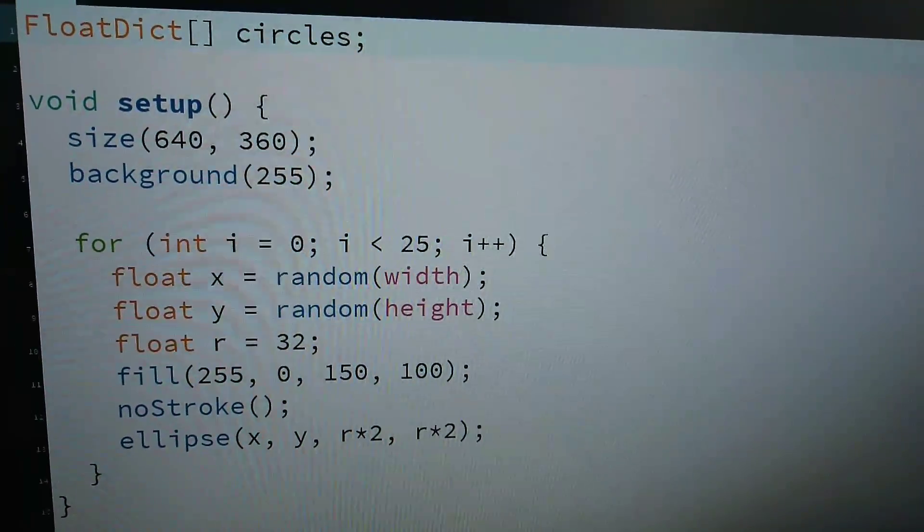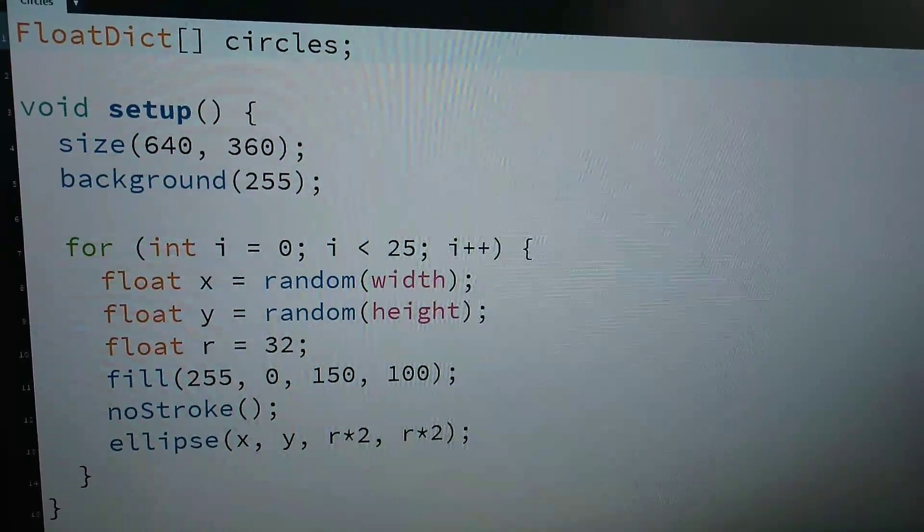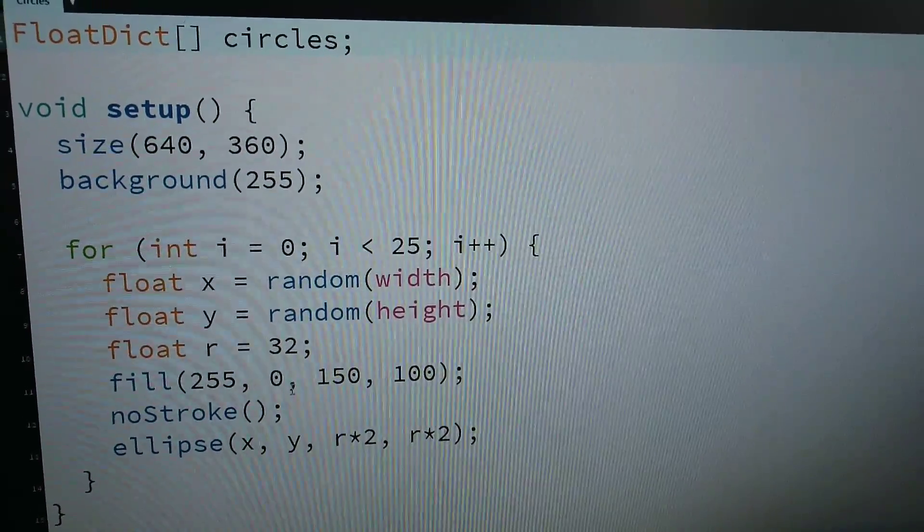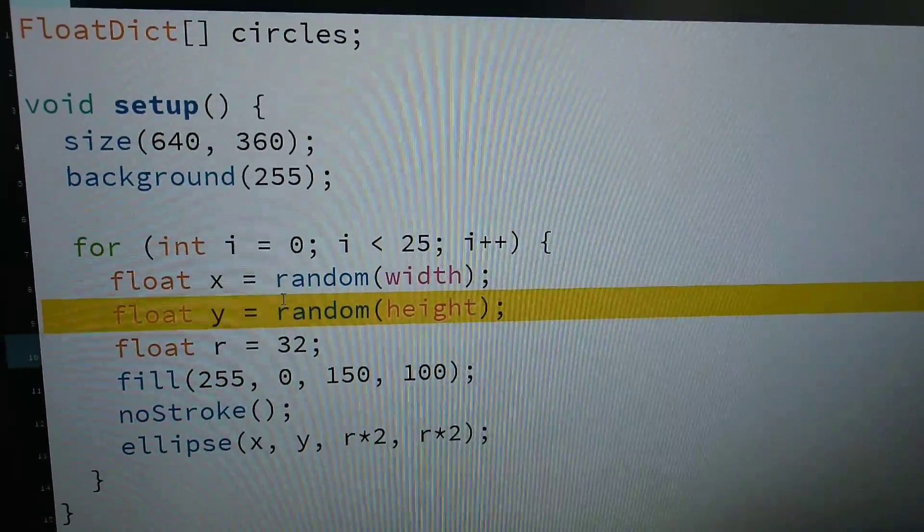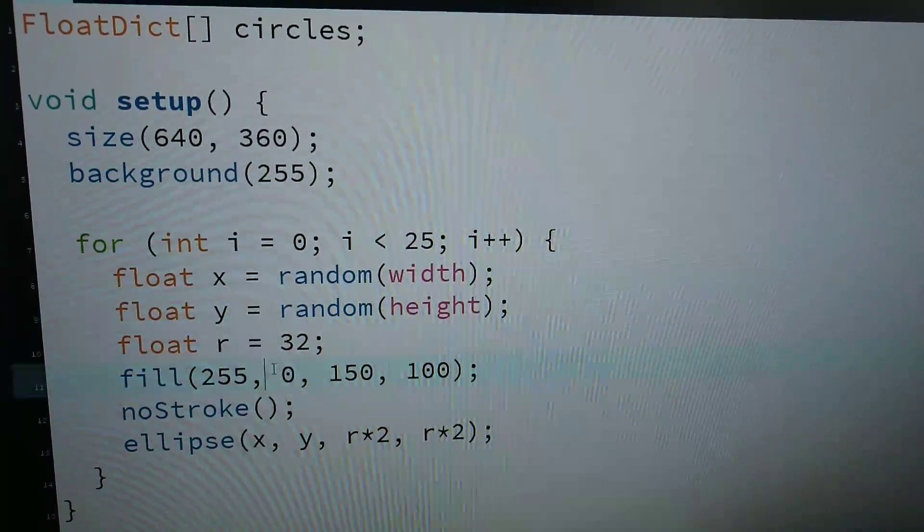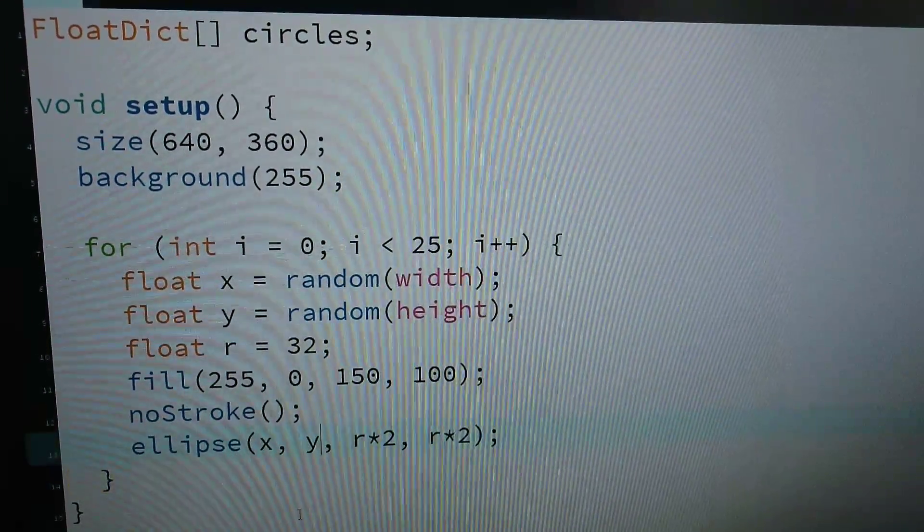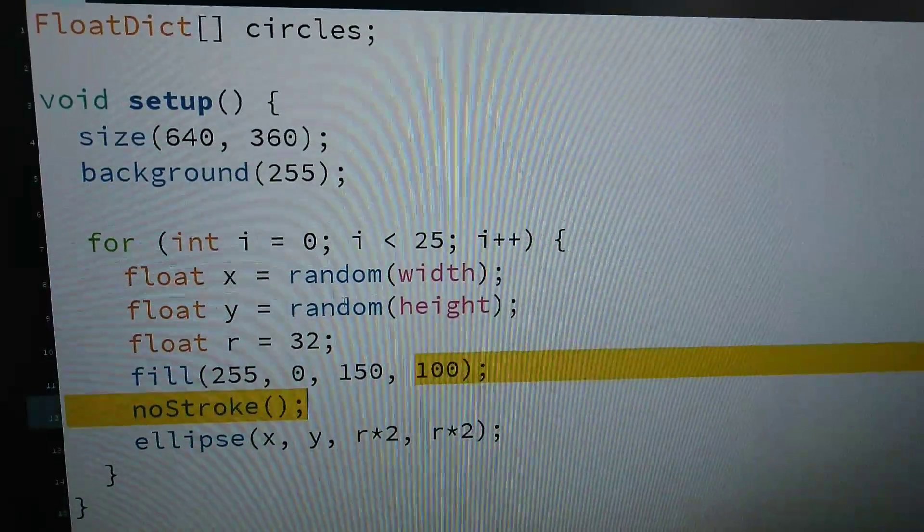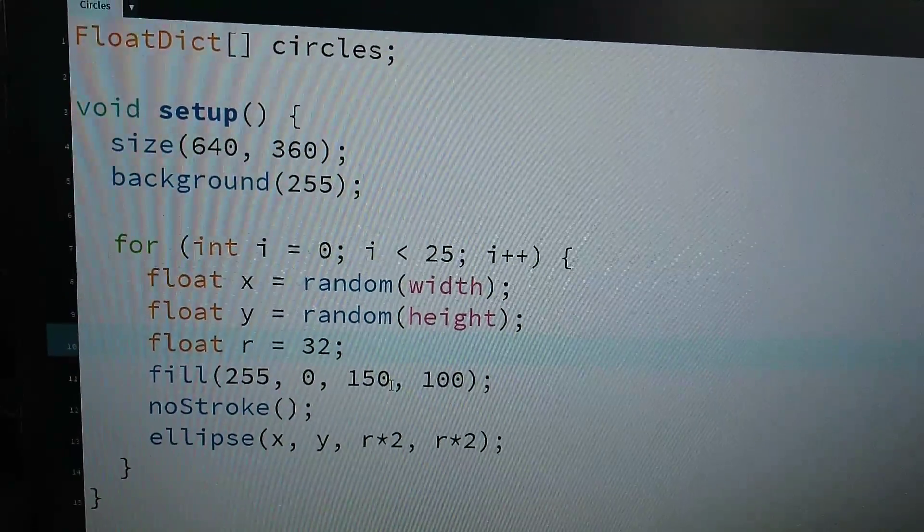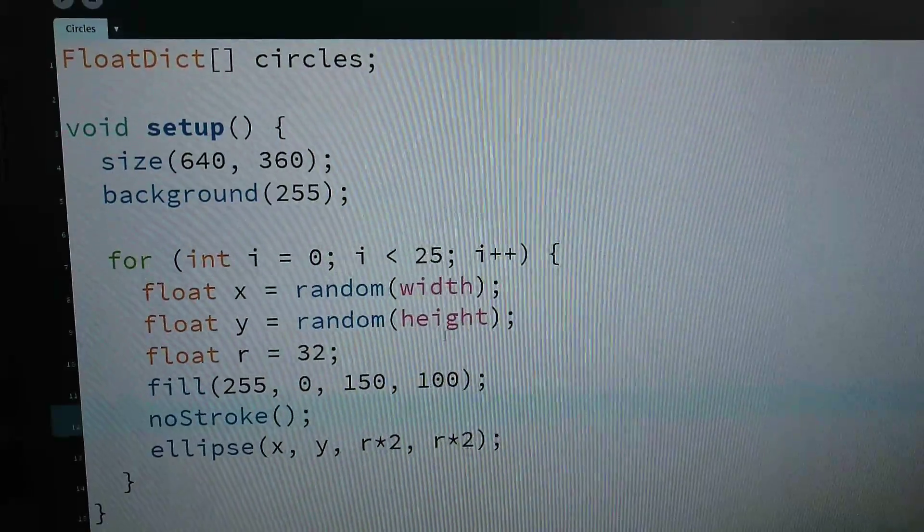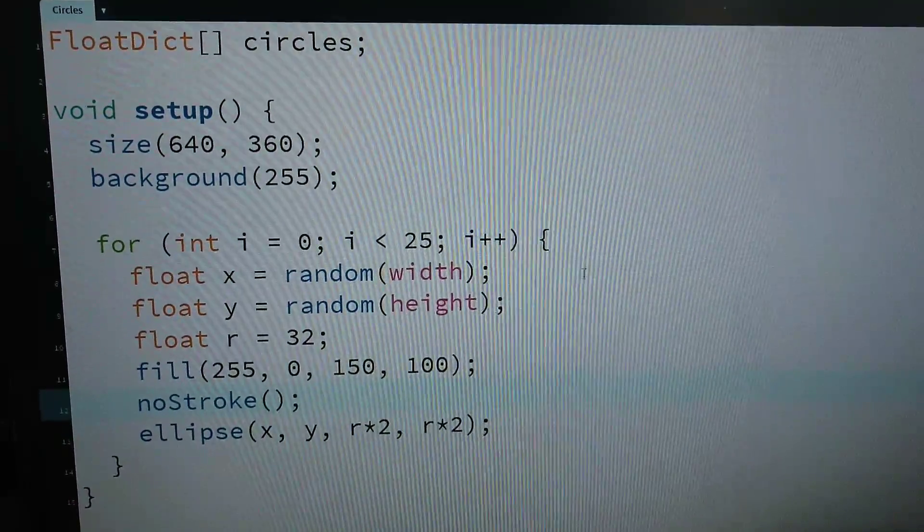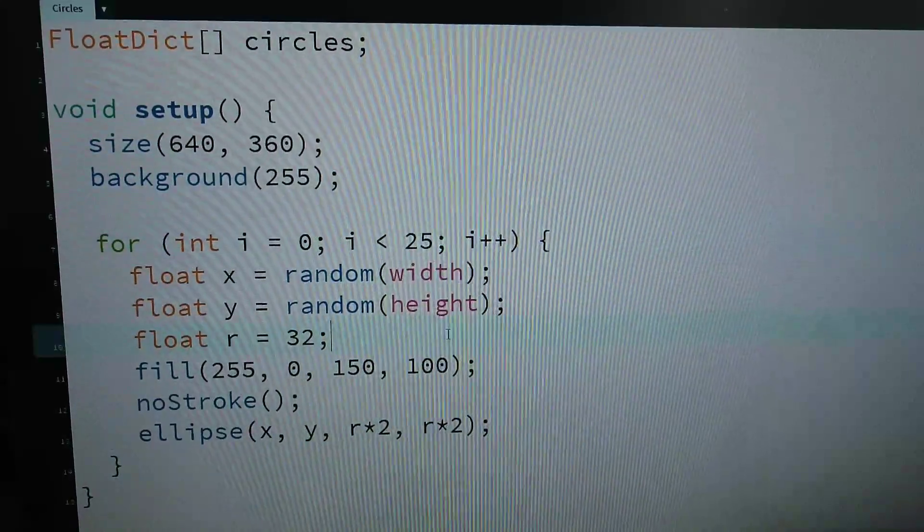Float dictionary being like a more like a JavaScript object, a hash map, like hash map instead of Java. So I'm using a float dictionary now. By the way, I need to save these circles somehow.